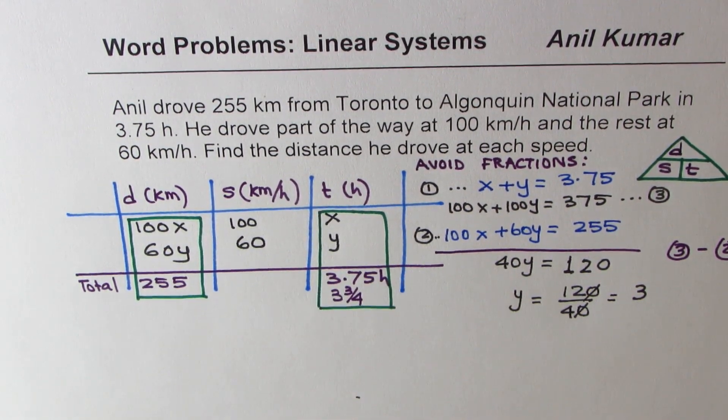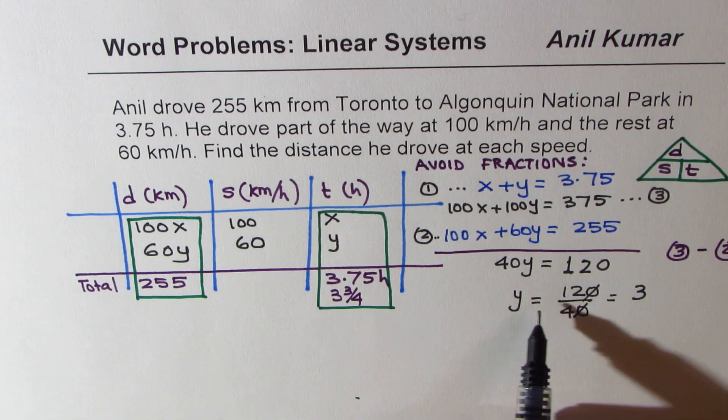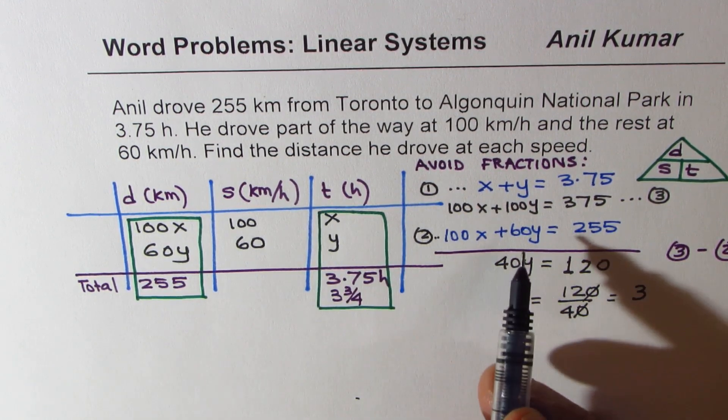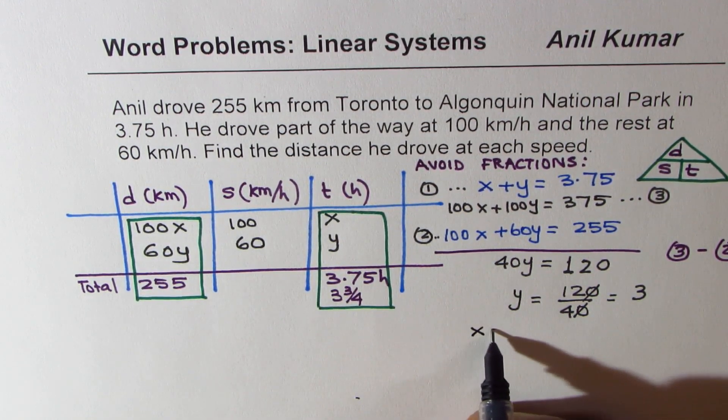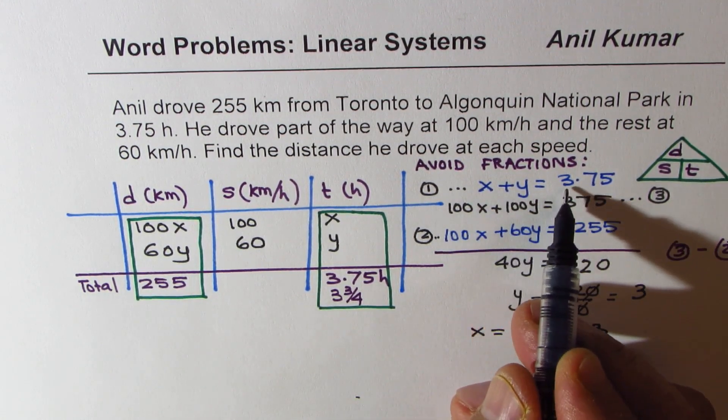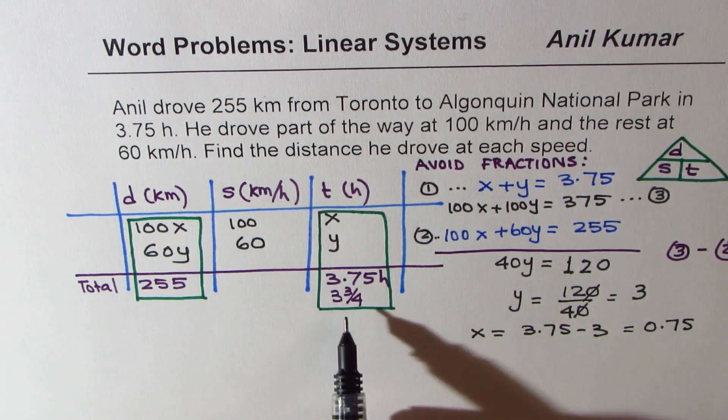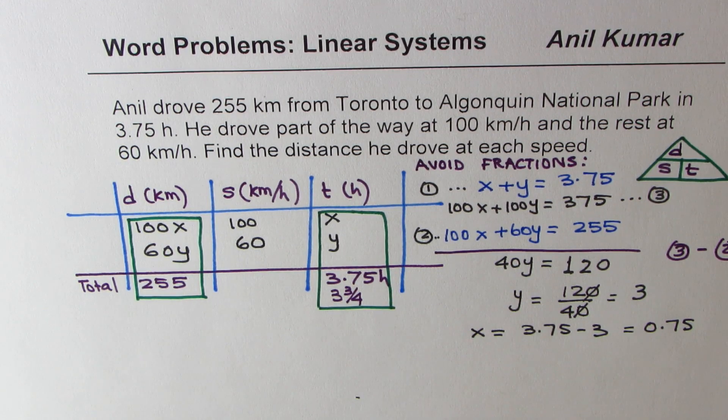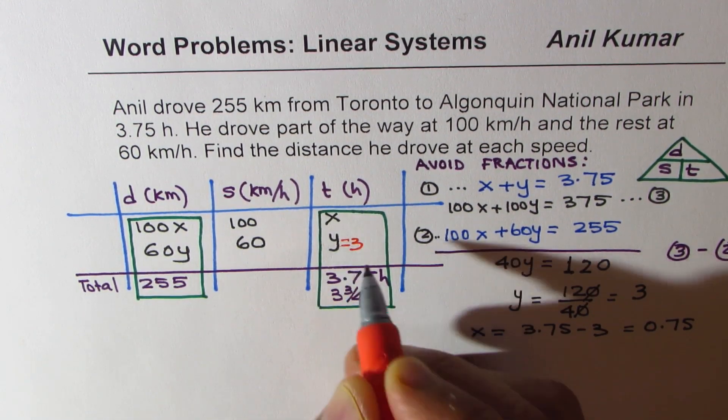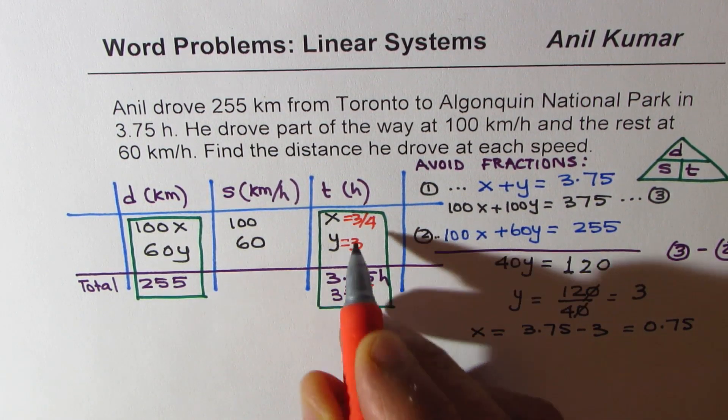So we get time 3 hours for y. If y is 3 hours, what is x? x will be equal to 3.75 take away 3. Since x plus y is 3.75, that is 0.75, or 3 fourths of an hour. Once we know these times which we just calculated, we found y equals 3, and x equals 3 fourths or 0.75.